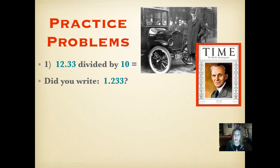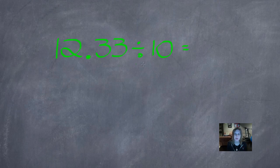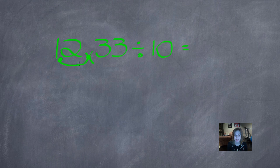Did you write 1.233? Let's see how we did that. So remember, the first thing we do is count how many zeros we have. And we only have one zero. So that means we're going to move our decimal one place to the left. So here we go. Let's move that decimal. And now it's right here in front of the one, so it's no longer here.